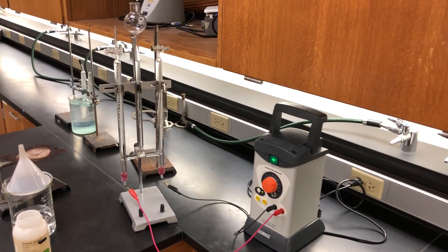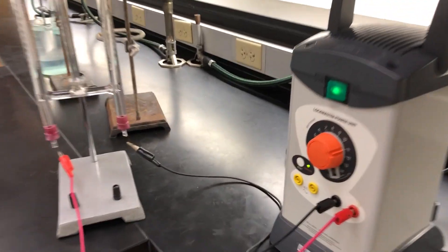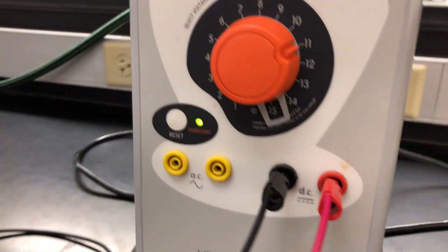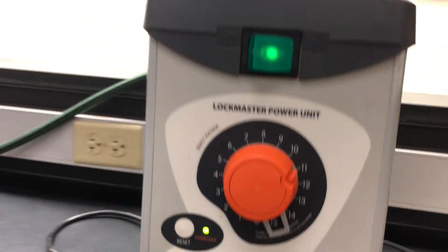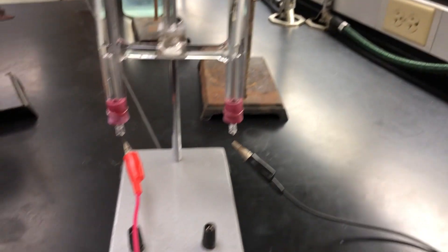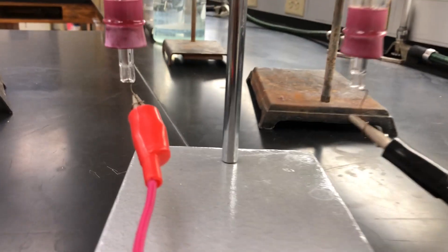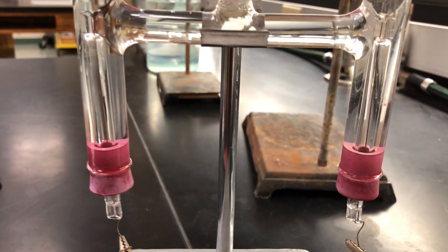Electrolysis of water. We've got a DC power supply set to 11 volts, and a Hoffman tube with power supply connected at the bottom, and a couple of electrodes there.